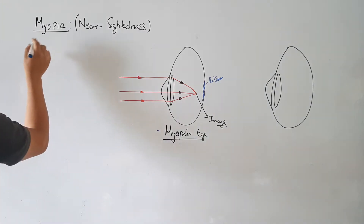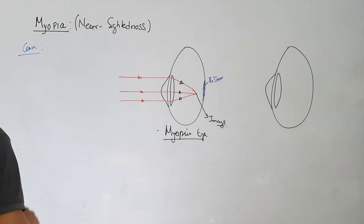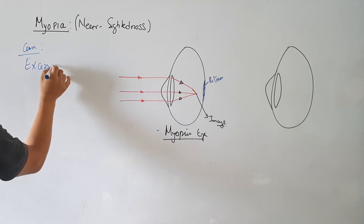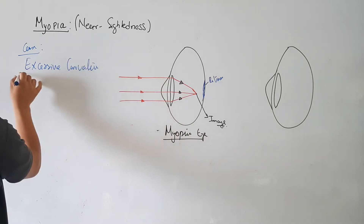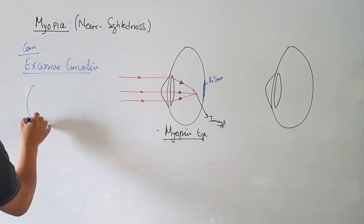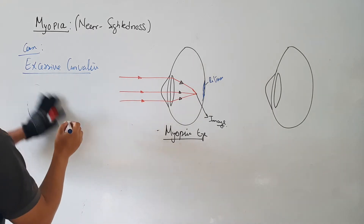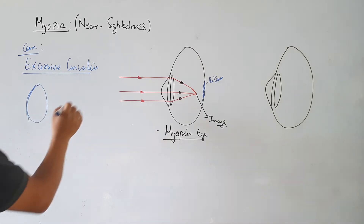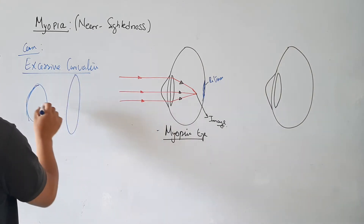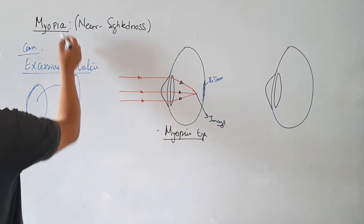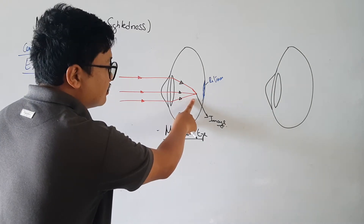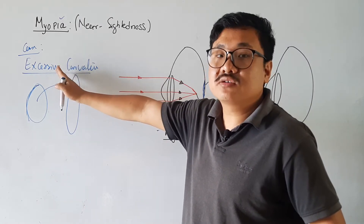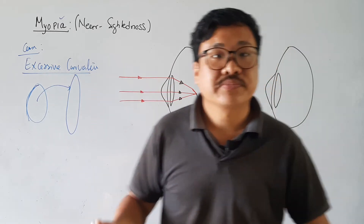Let us look at the cause. The first cause is excessive curvature. The curvature of the eye lens becomes very large, which causes the image to form in front of the retina. When the image is formed in front of the retina, it is called myopia. So, excessive curvature is one cause of myopia.